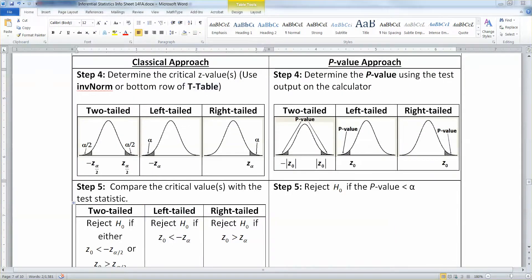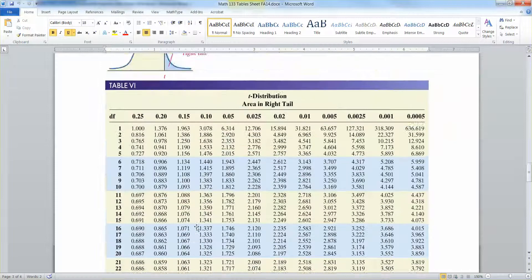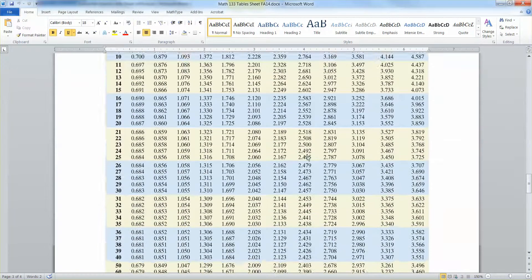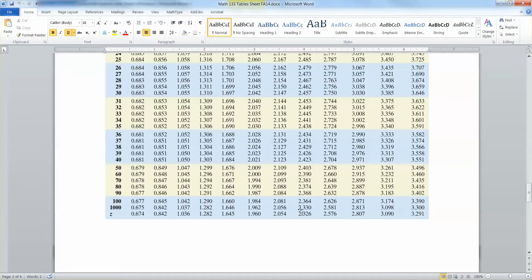One other side note, you could have found it with the T table. Let me show you how. So we said alpha was 0.01. So you go to the 0.01 column, you drop to the very, very bottom, and it tells you it's 2.326.